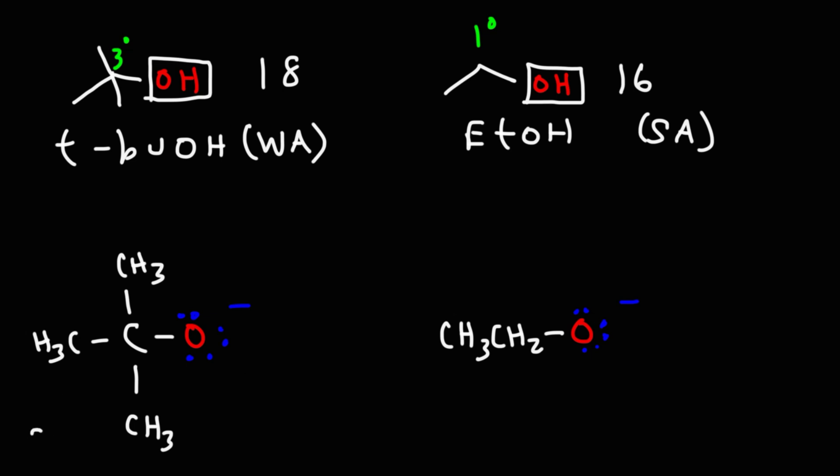So tert-butoxide is the stronger base. Ethoxide is the weaker base since ethanol is the stronger conjugate acid. So why is tert-butoxide the stronger base? Why is it less stable than ethoxide? The weaker base is more stable. It has a lower potential energy.